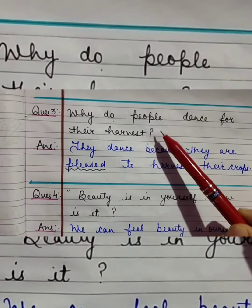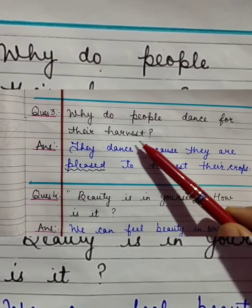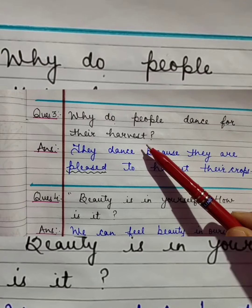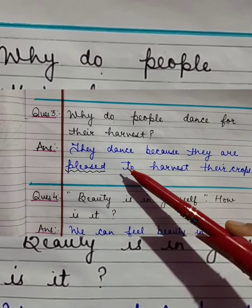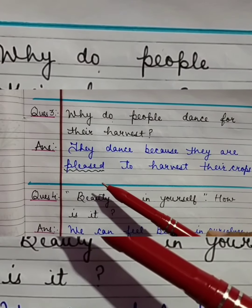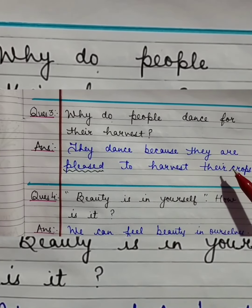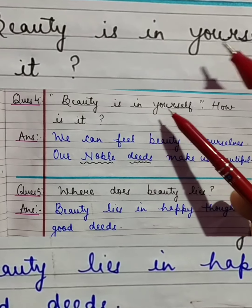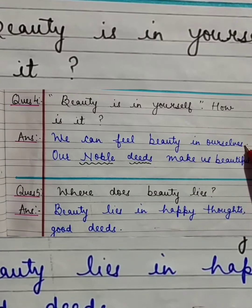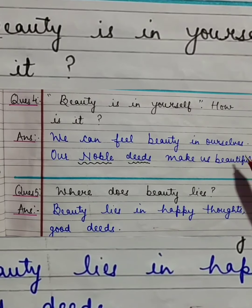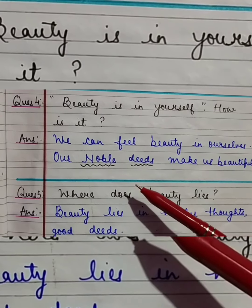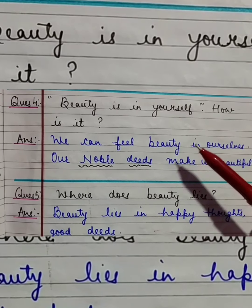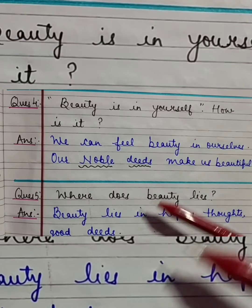Question number three: Why do people dance for their harvest? Harvest means the time when the crop is ready. Answer: They dance because they are pleased — they are glad and very happy to harvest their crops. Question number four: Beauty is in yourself — how is it? Answer: We can feel beauty in ourselves. Our noble deeds make us beautiful. Our good actions, good work, good thoughts, and good deeds make us look beautiful from inside and outside.